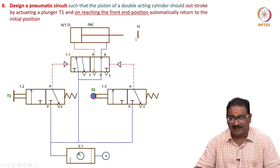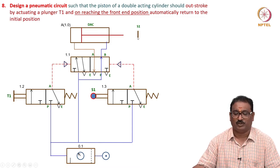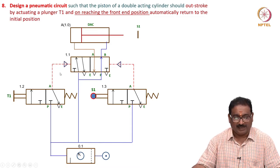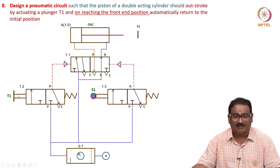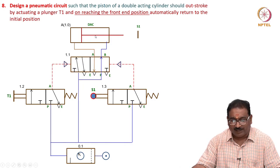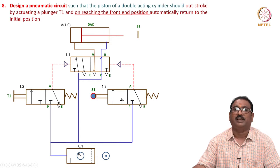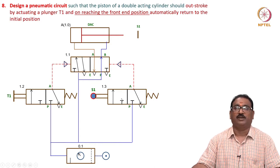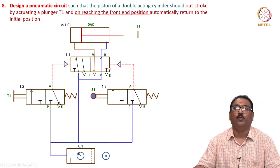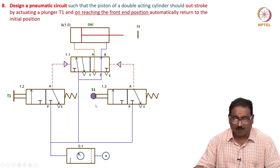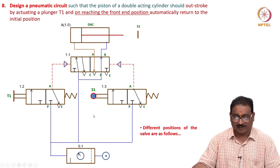We will see S1 is the limit switch position. Same circuit as before. T1 is the same for extension. After the piston reaches and touches S1, automatically this 3/2 DCV is actuated - otherwise no. I will show you very quickly how it operates.